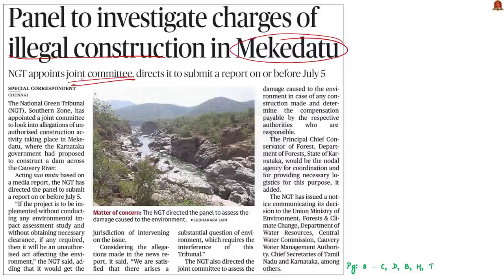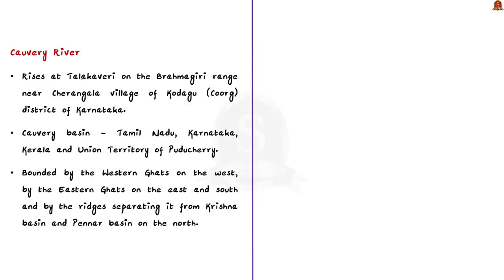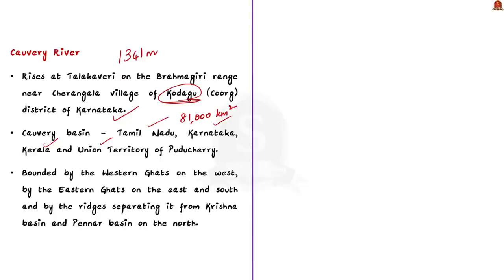In this context, let us learn about the Kaveri River from a Prelims perspective. The river rises at an elevation of 1,341 meters at Thala Kaveri on the Brahmagiri Range, near the Cherangala village of Kodagu district of Karnataka. The Kaveri Basin extends over the states of Tamil Nadu, Karnataka, Kerala and the Union Territory of Puducherry, draining an area of nearly 81,000 square kilometers. It is bounded by the Western Ghats on the west and the Eastern Ghats on the east and south, with ridges separating it from the Krishna Basin and Pennar Basin on the north.